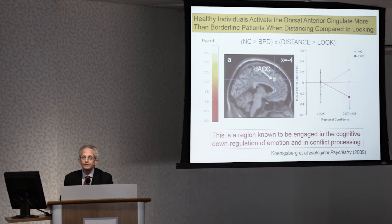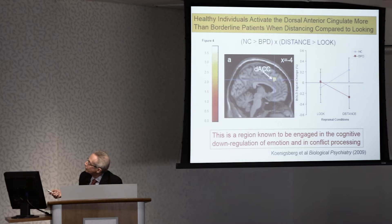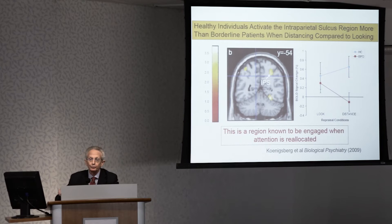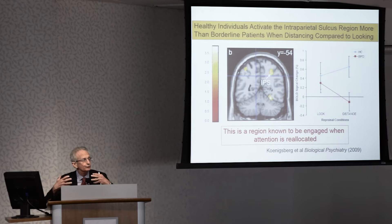We found that in healthy controls there was increased activity in the dorsal anterior cingulate while they were distancing compared to borderlines. Unpacking this double-subtraction picture, the blue line represents healthy controls — they increase their activation in the distancing condition. Borderline patients are not doing that; if anything, they're decreasing their activation. Another area in the whole-brain analysis where we found a difference was in the intraparietal sulcus region of the parietal cortex, where healthy subjects again increased their activation when distancing and borderline patients did not — a region also involved in attention allocation.